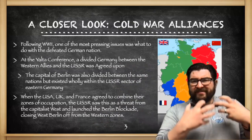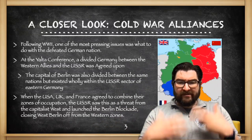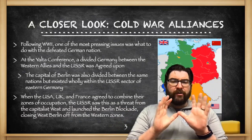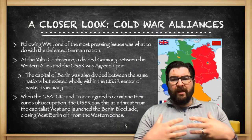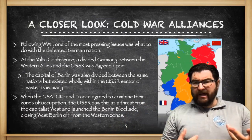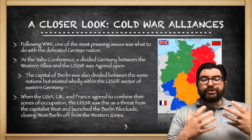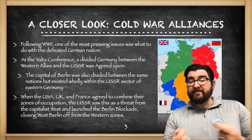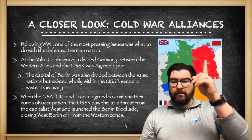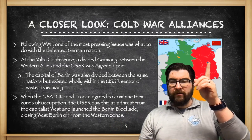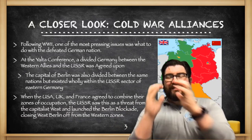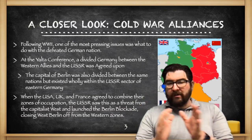Today we're going to run through the steps on how we get to these Cold War alliances and their effects. Following World War II, one of the most pressing issues for the victors was what to do with the defeated German nation. At the Yalta Conference, held in February of 1945, a divided Germany between the Western Allies and the Soviet Union was agreed upon. The capital of Berlin was also divided between the same nations, but existed wholly within the USSR sector of Eastern Germany.